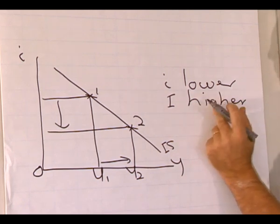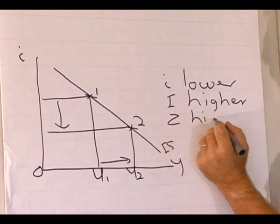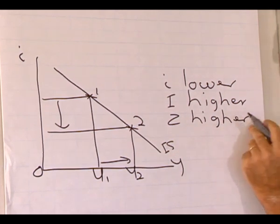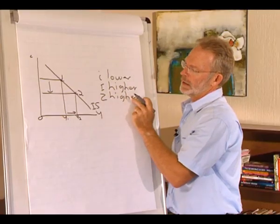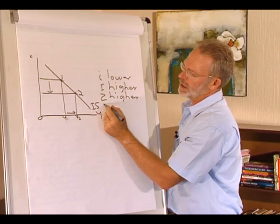The higher level of investment led to an increased demand for goods and services. So the demand for goods and services is also higher. The higher demand for goods and services led to an increase in the level of production.